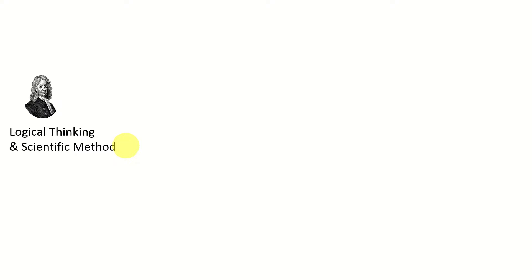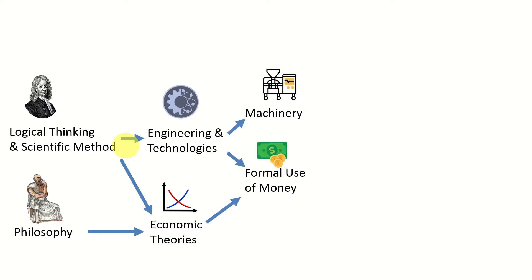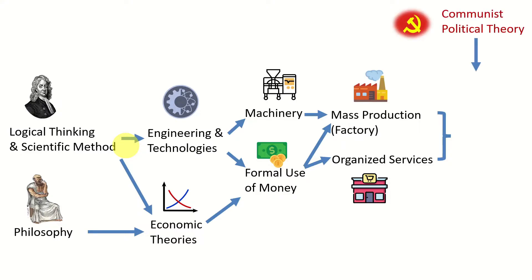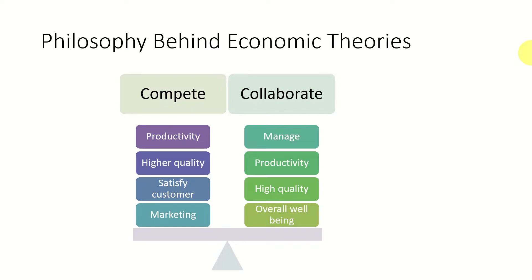The driving force behind industrialization in Europe was triggered during the Enlightenment period due to the advancement of science and logical thinking. People started developing machinery and engineering concepts, and also began building economic theories. This resulted in developing machinery and the formal use of money, the capitalist idea. The combination of machinery and capitalism resulted in building factories and mass production, combined with utility services for distribution and selling. During this time, people also came up with political theories to identify the best ways to carry out production.